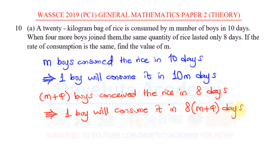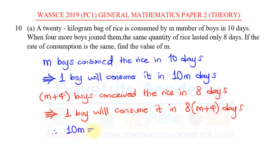It is this ratio of proportion that can help us look at it together. Since the rate of consumption is the same, we can say: therefore, 10M is equal to 8 times (M plus four).